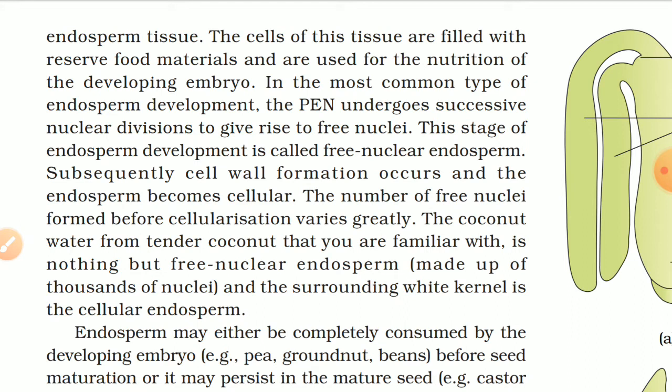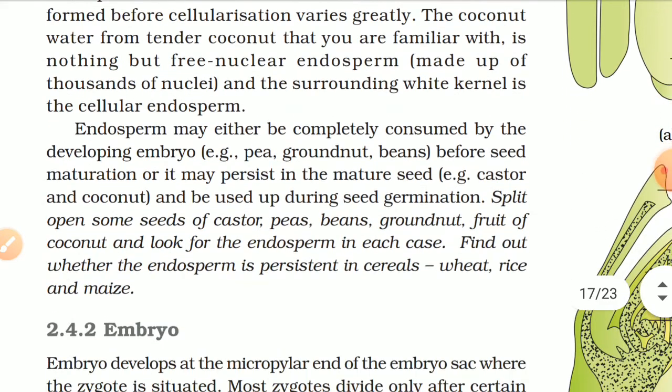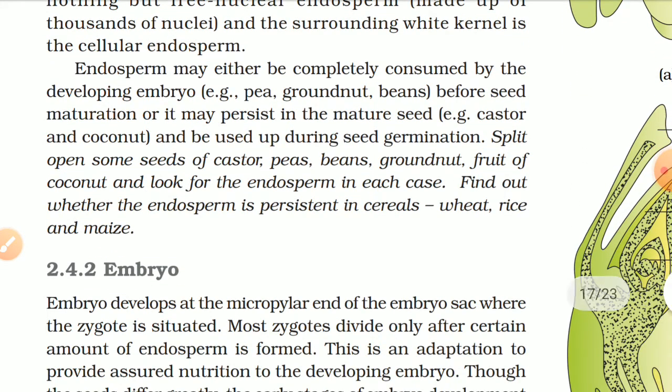The surrounding white kernel of coconut is the cellular endosperm. Endosperm may either be completely consumed by the developing embryo (e.g., pea, groundnut, beans) before seed maturation, or it may persist in the mature seed (e.g., castor and coconut) and be used up during seed germination. Split open some seeds of castor, peas, beans, groundnut, and fruits of coconut and look for the endosperm in each case. Find out whether the endosperm is persistent in cereals — wheat, rice, and maize.